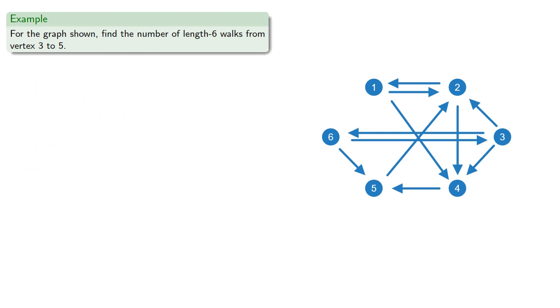For example, we might want to find the number of length 6 walks from vertex 3 to vertex 5. We already found the adjacency matrix, so we find the 6th power of the adjacency matrix.